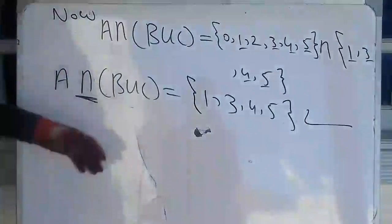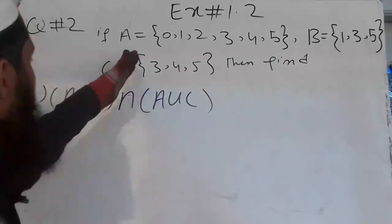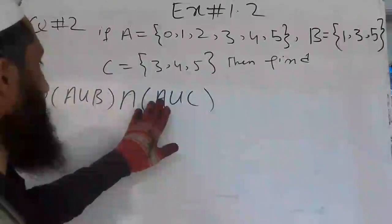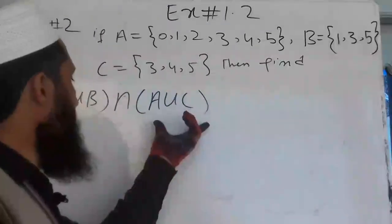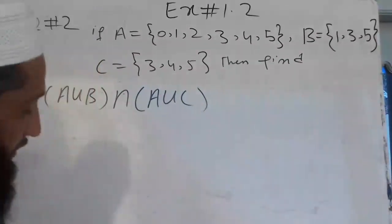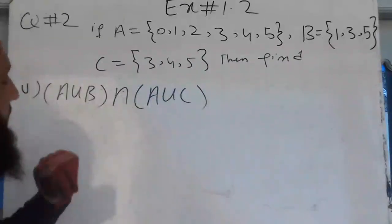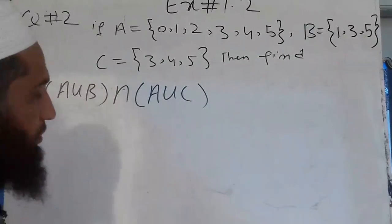Then we will answer the following question. Dear students, the next expression is A union B, intersection A union C. In mathematics, the first step is to find A union B and A union C, then the second step is the intersection.